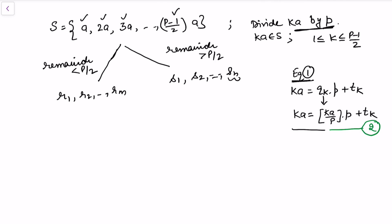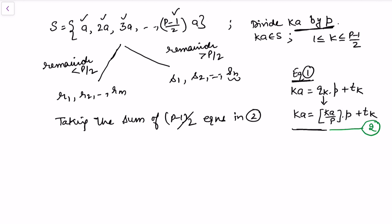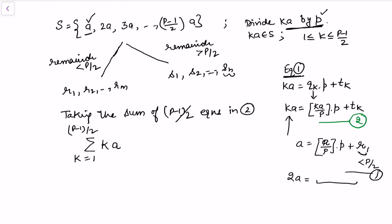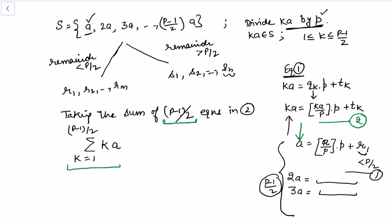Now summing all (p-1)/2 equations of the form of equation 2 — for k from 1 to (p-1)/2 — the left hand side gives the summation of ka for k from 1 to (p-1)/2. This represents each multiple of a in the set S being divided by p and written with its quotient and remainder.